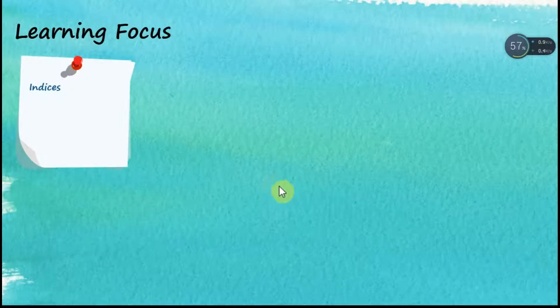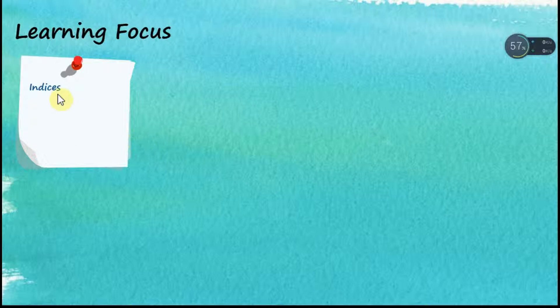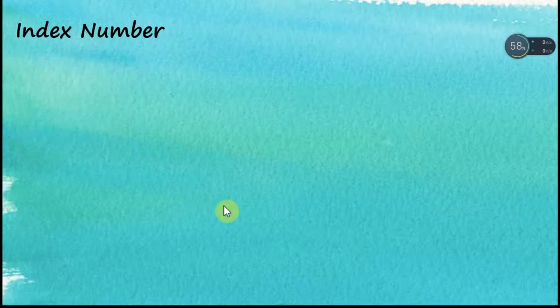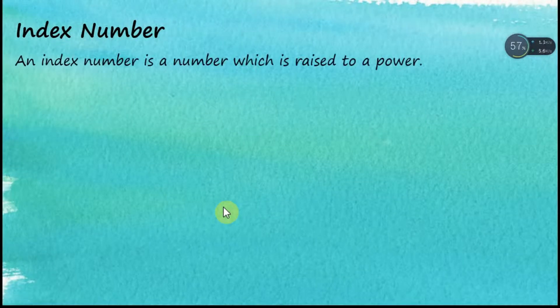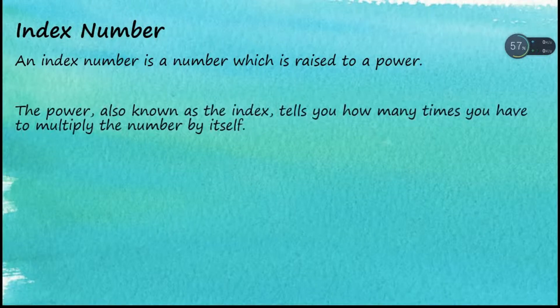In this video we are going to discuss what is an index number. An index number is a number which is raised to a power, and the power, also known as the index, tells you how many times you have to multiply the number by itself.